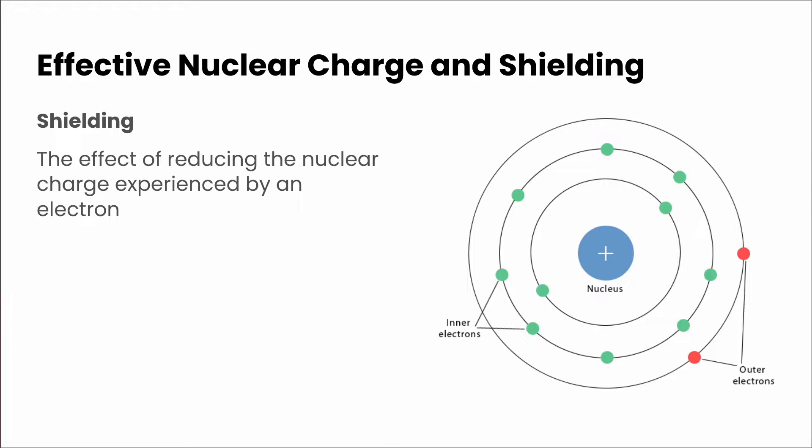So we would say that those outer electrons in this picture, those two electrons are shielded because we've got those inner electrons that are reducing the overall nuclear charge that's being experienced by those valence electrons.